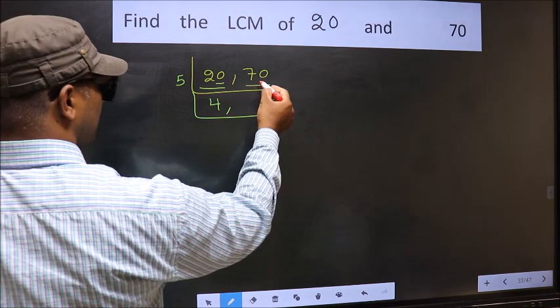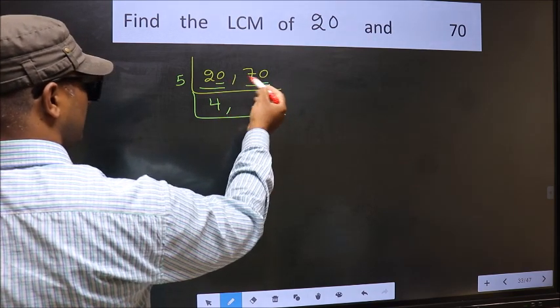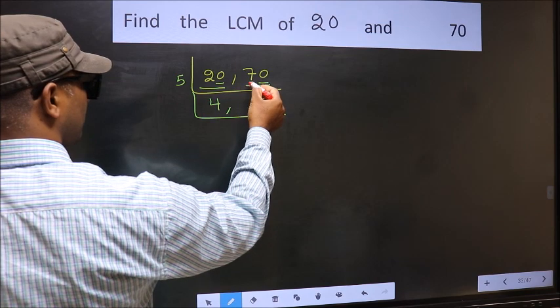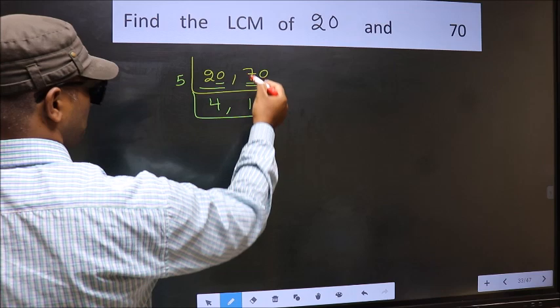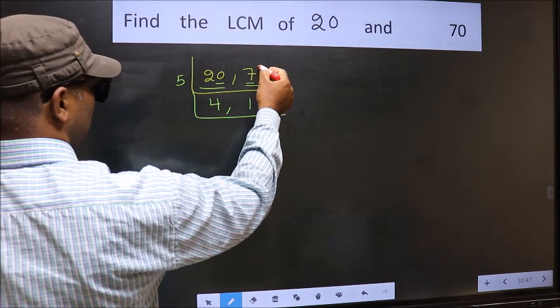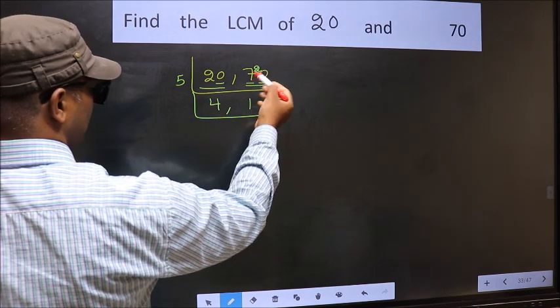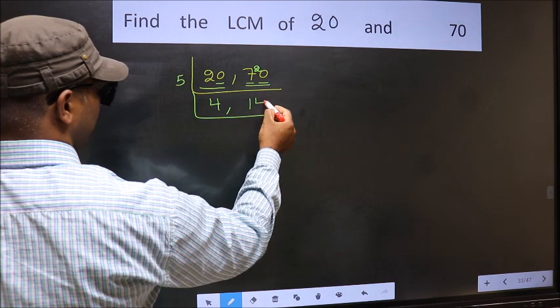The other number 70, last digit 0, so this is divisible by 5. First number 7. A number close to 7 in 5 table is 5 once 5. 7 minus 5 is 2, 2 carried forward 0 is 20. When do we get 20 in 5 table? 5 fours 20.